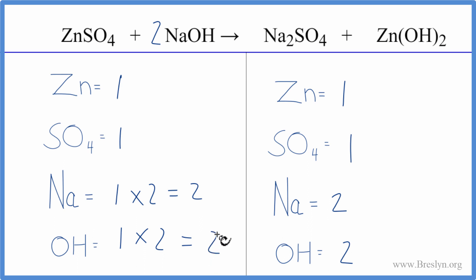This equation is balanced. So you can see the utility when you have a polyatomic ion like SO4 here and on the other side, just count it as one thing. It saves a lot of time, it's usually more accurate, and it gives you the same answer.